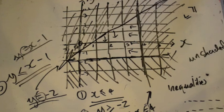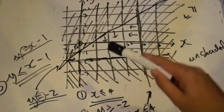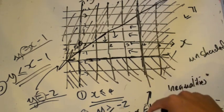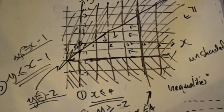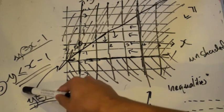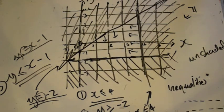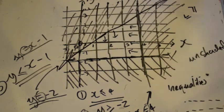So we have our three inequalities which bound the unshaded region: x is less than or equal to 4, y is more than or equal to minus 2, and y is less than or equal to x minus 1. Hopefully that was helpful. Thank you very much for watching. I may do more of these because they are also good for general storage. This is Afiq — thank you.